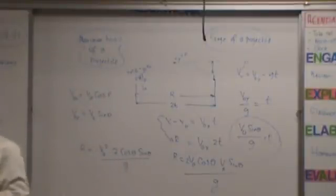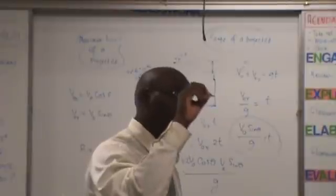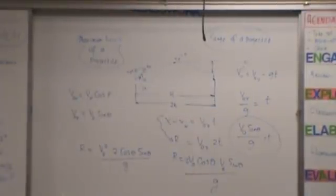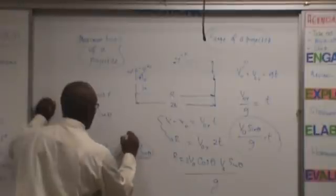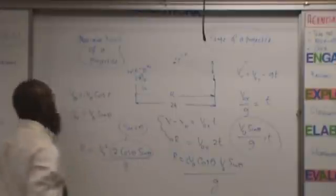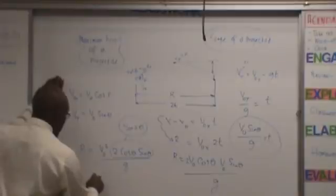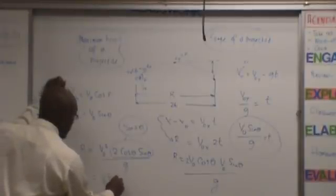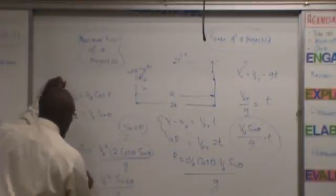For those who've been paying attention in trigonometry class: what is 2 cosine theta sine theta? It becomes sine 2 theta. So instead of writing that full expression, you can simply write R equals V₀ squared sine 2 theta over G. That's your range equation.